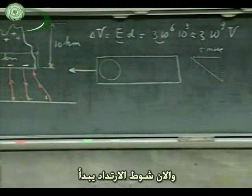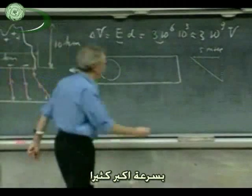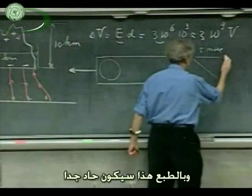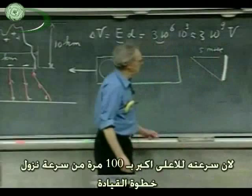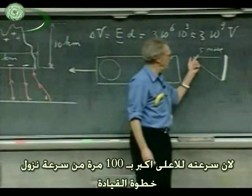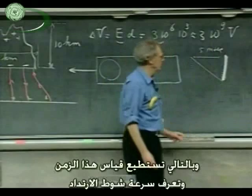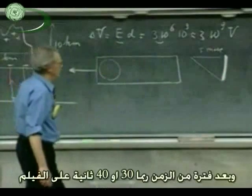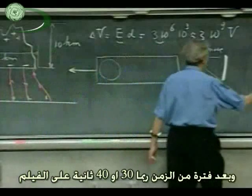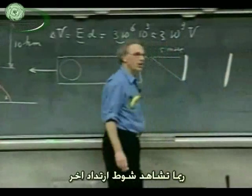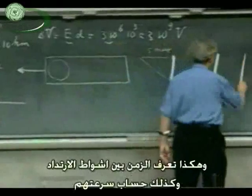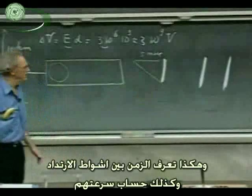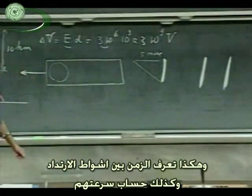The return stroke takes place at a much higher speed, so you see a tremendous amount of light — and the trace is very steep because it travels about a hundred times faster than the step leader. You can measure these times and calculate the speed of the return stroke. Then later on the film, maybe 30 or 40 milliseconds later, you may see another return stroke, and another one. So you can see how long the time was between return strokes and calculate their speeds.